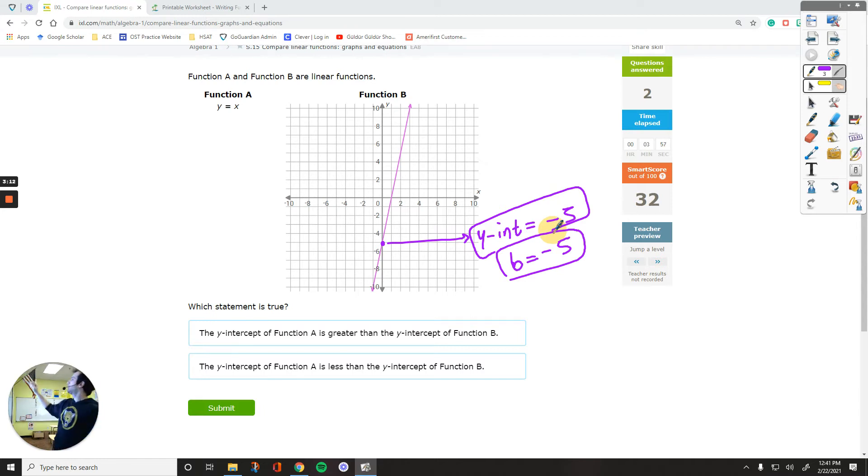And in here, on the left side for function A, remember the general form is y equals mx plus b. So the number being added in the end is the b-value, is the y-intercept. So right here, it is y equals 1x plus 0. There's no number added. So you can just put plus 0. That plus 0 is the b-value you have. So b equals 0.